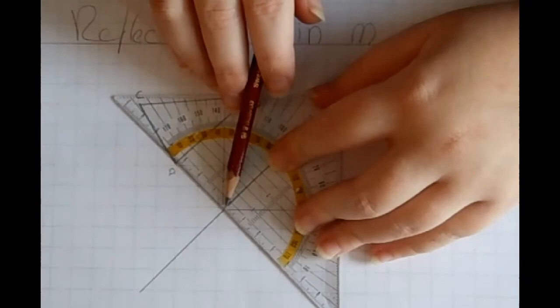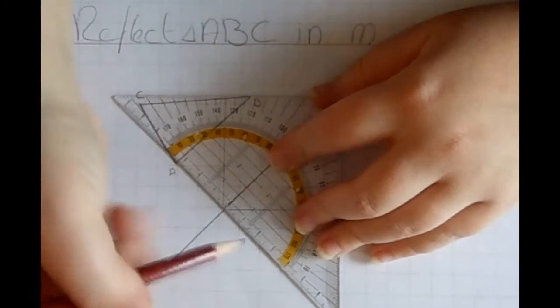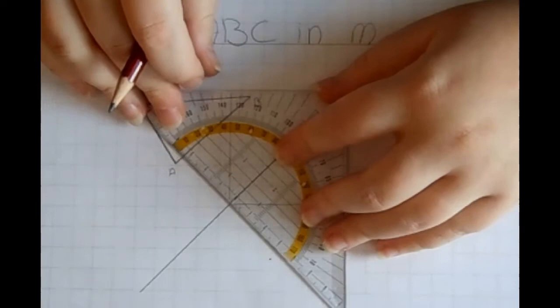I'm going to measure: 1, 2, 3, 3.2. And I am going to measure the same distance on the other side of the mirror line and put a dot right there.